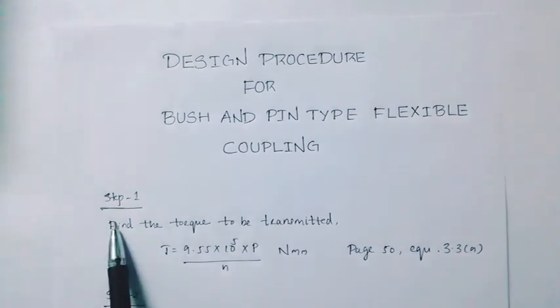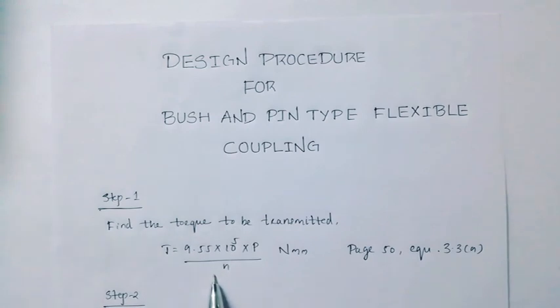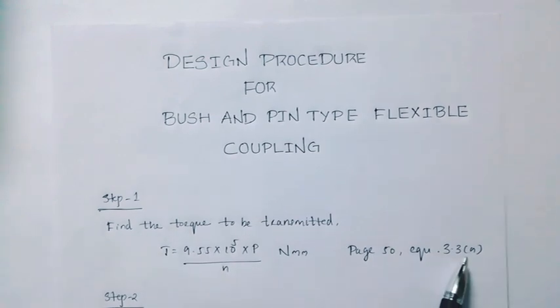Step 1: Find the torque to be transmitted. T is equal to 9.55 into 10 raise to 5 into P divided by N. Page number 50, equation 3.3A.